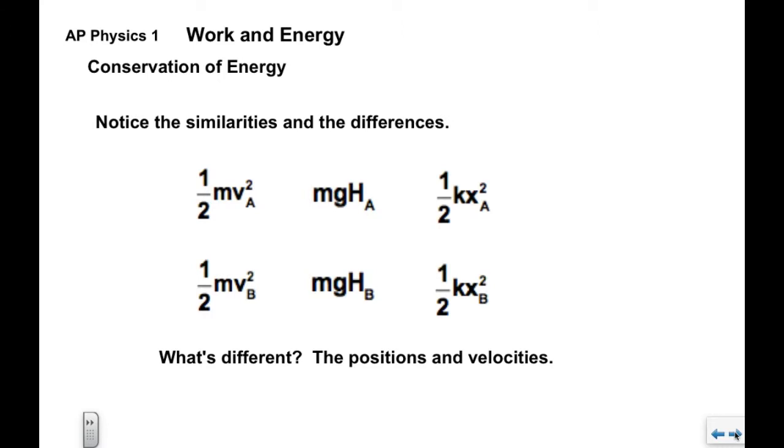Now if we look at the similarities and the differences, obviously the formulas used to determine how much of each is the same. What's different about it are the positions and the velocities. So represented by v sub a and v sub b, h sub a, h sub b, x sub a, x sub b. These are different places and potentially doing different things.